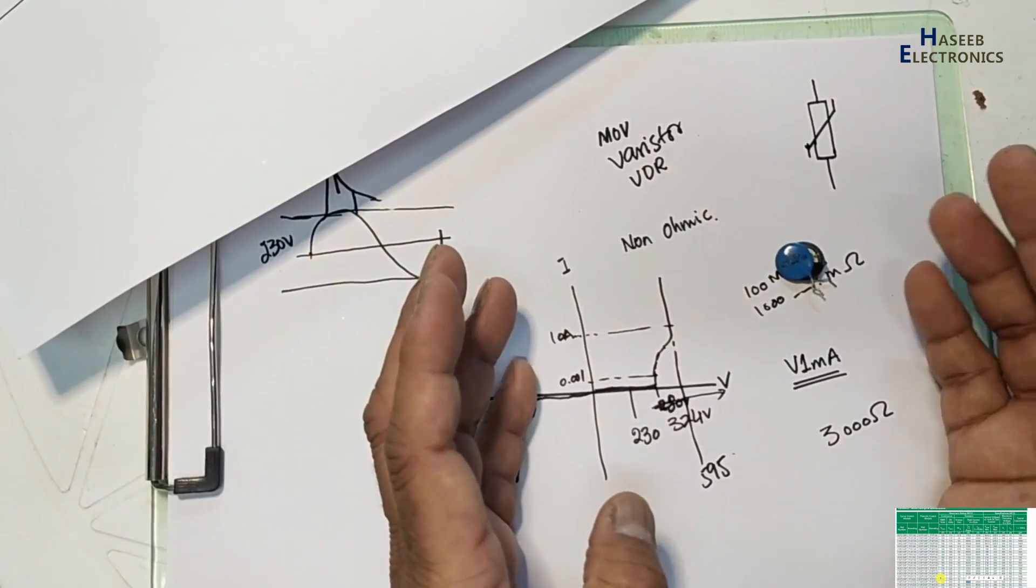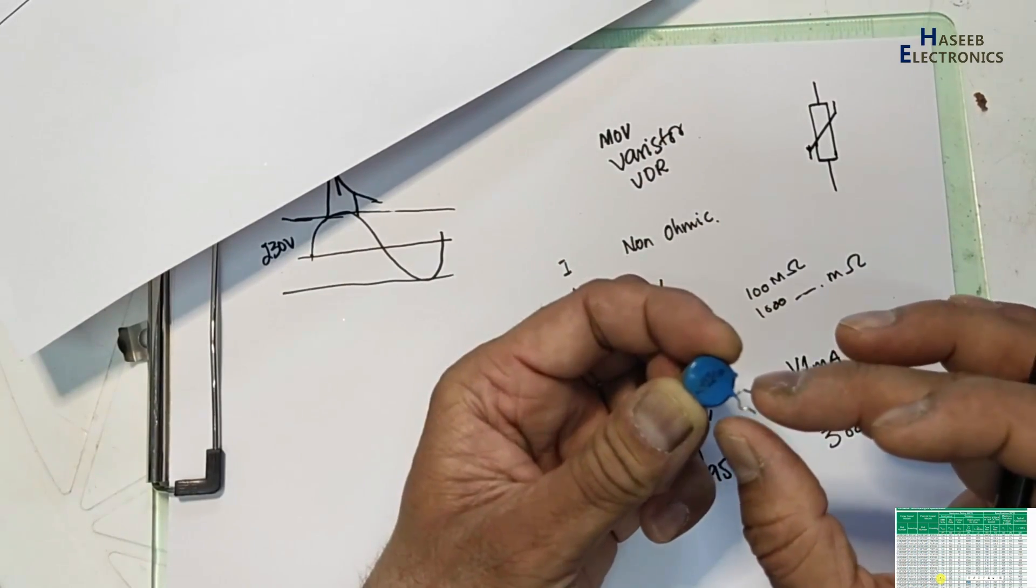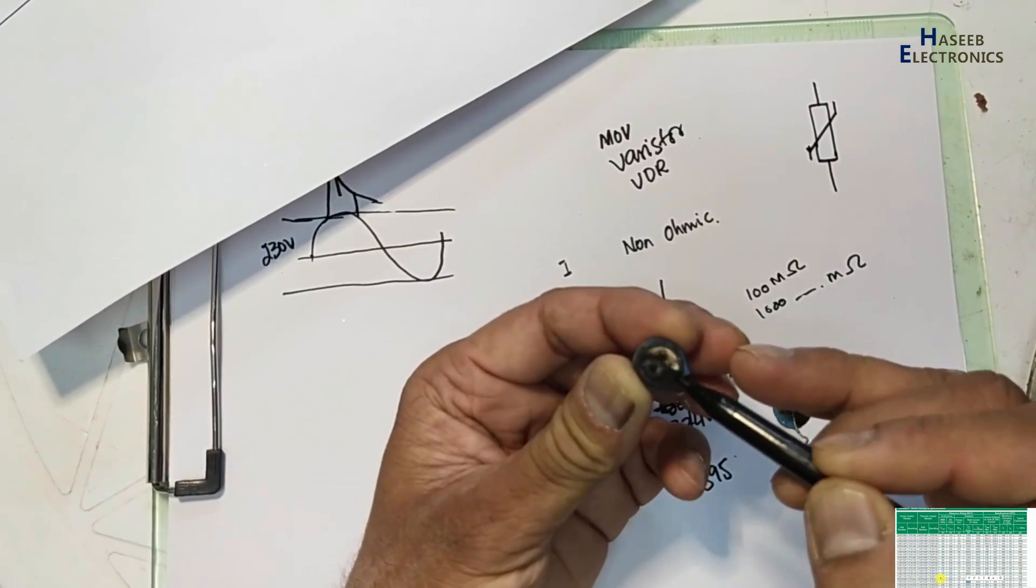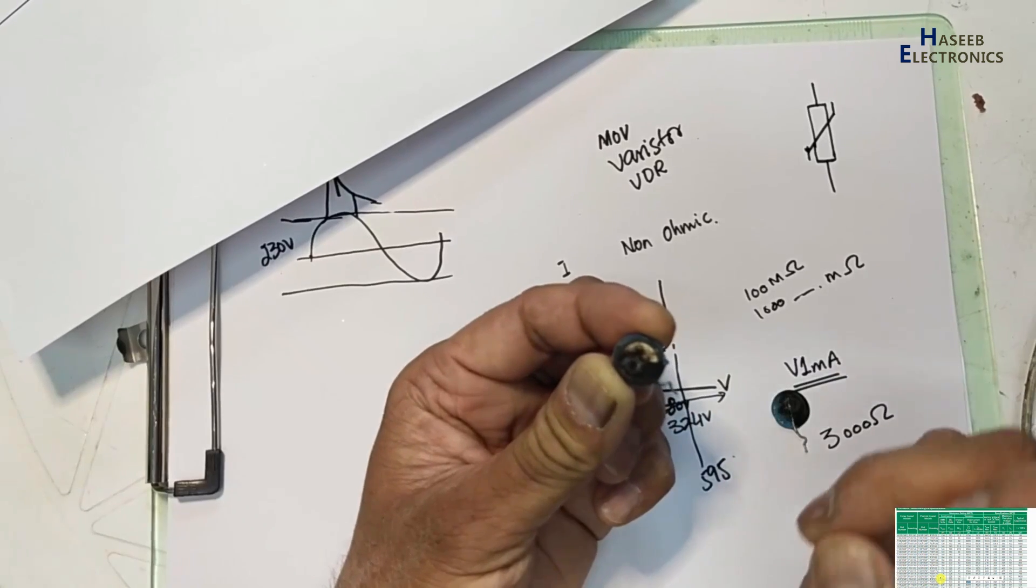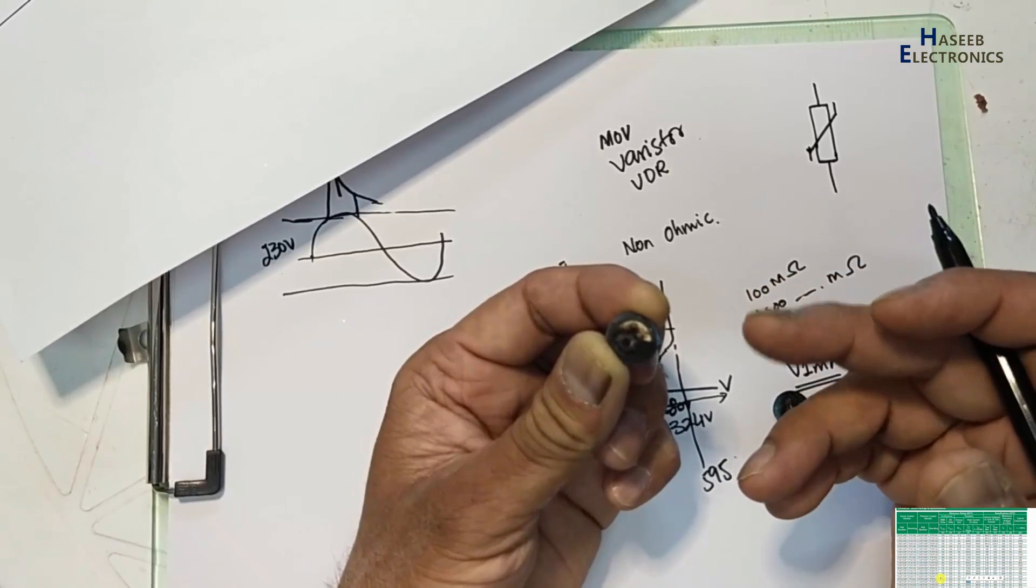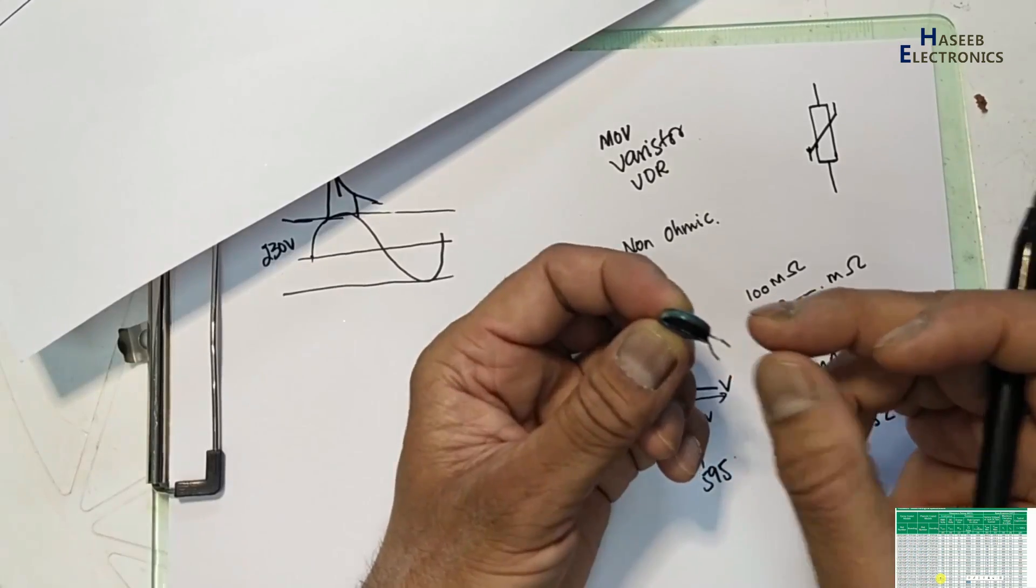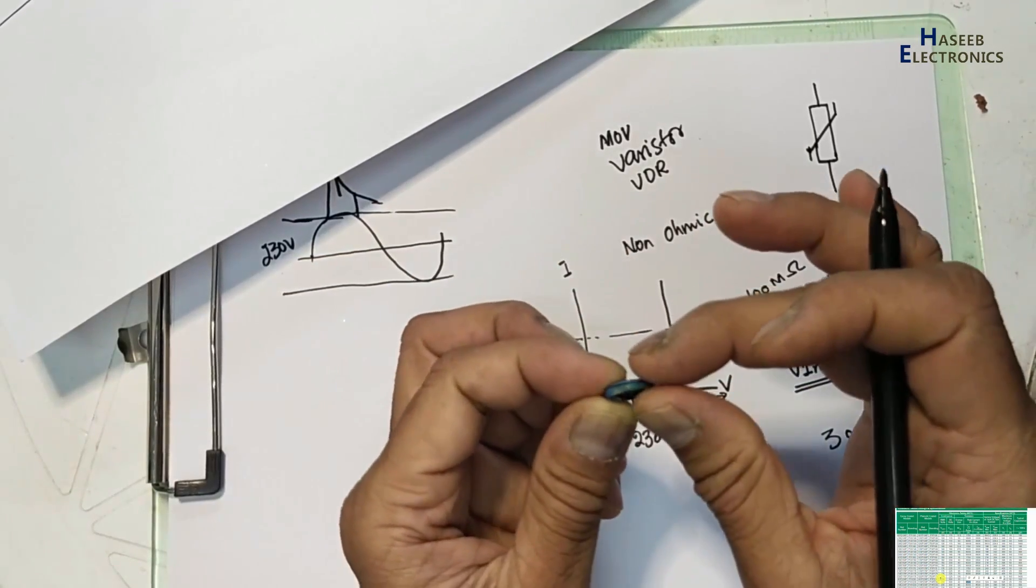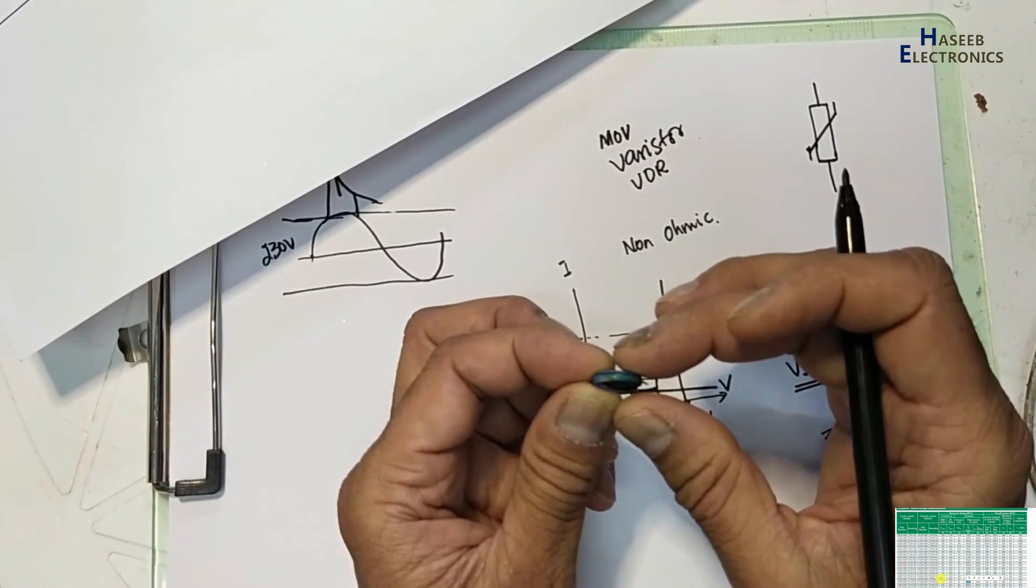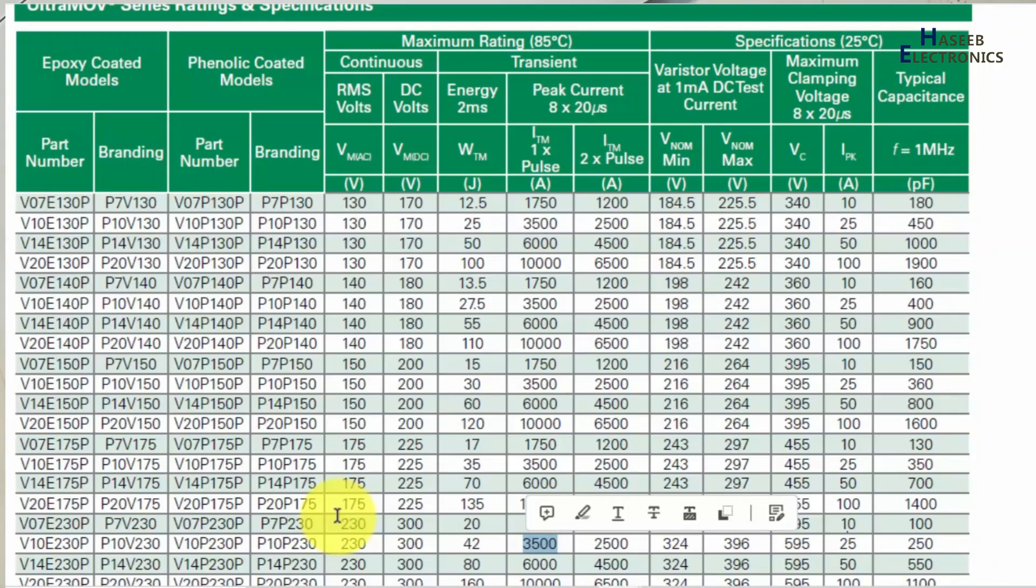Now if we are selecting any MOV, any varistor - if we need more current, this MOV comes in disk sizes. That is this disk size - it is in millimeters: 3 millimeter, 5 millimeter, 7 millimeter, 10 millimeter, 14, 20. Each disk size has its own current level. Then if we need more voltage, at that time its thickness will increase. More thick, more voltage. Larger disk size will handle larger strike.